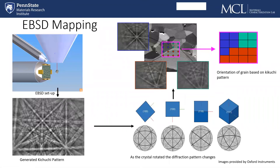Typically for most materials when we're mapping, we're going to index each individual point on a crystalline surface. What we're seeing here is a microstructure — we're going to focus the electron beam on one point on that crystalline microstructure, then move to another point some distance away that we determine. So we determine the step size, and then we determine what the Kikuchi pattern formed is for that particular point and color-code it into a map. It's a very simple concept.